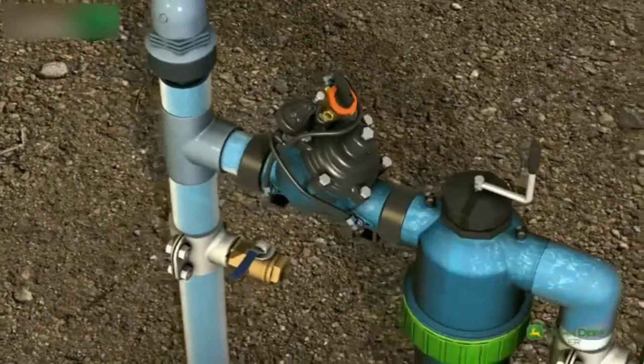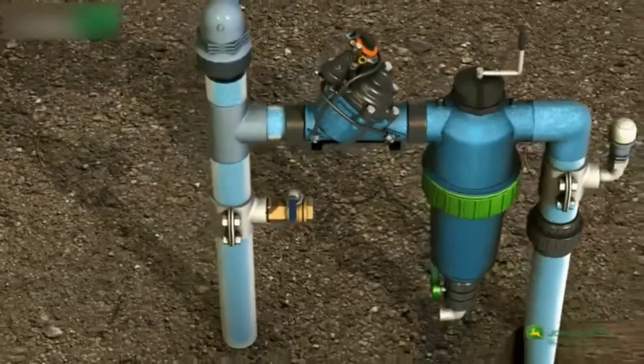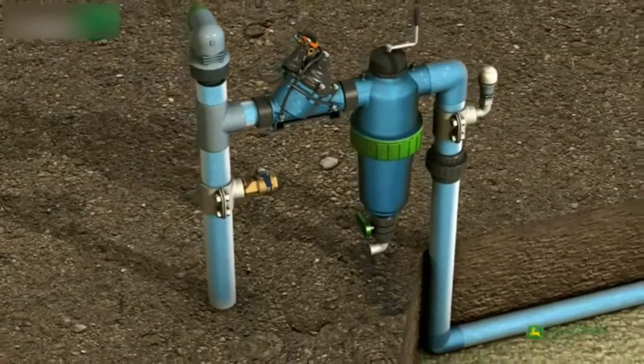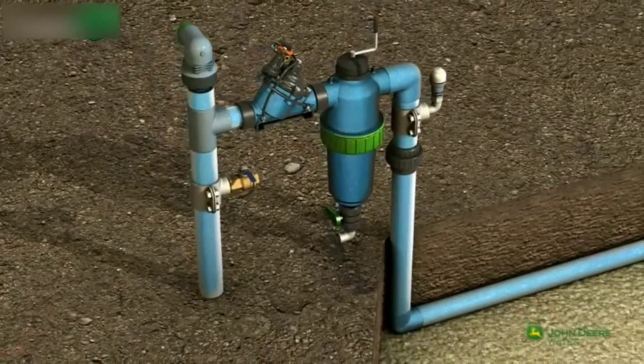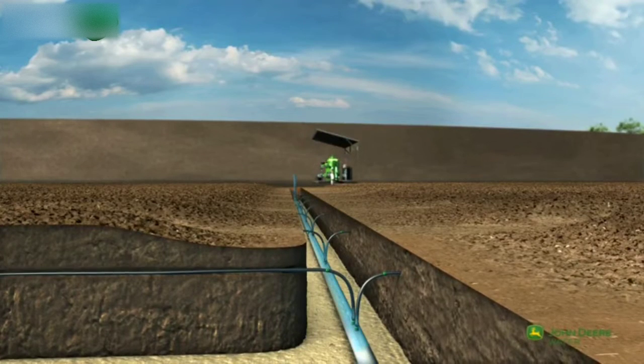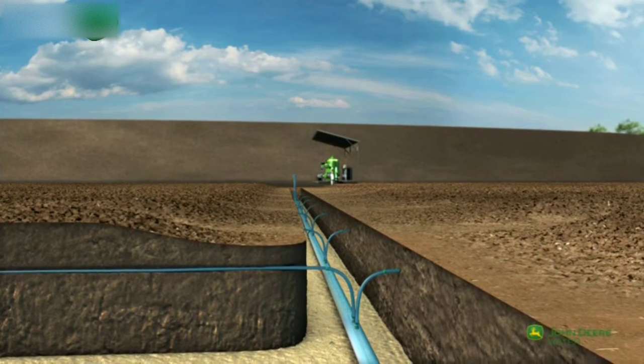The secondary valve is turned on according to the irrigation plan. The manifold is now filled, carrying the water throughout the field to the pre-installed drip lines.